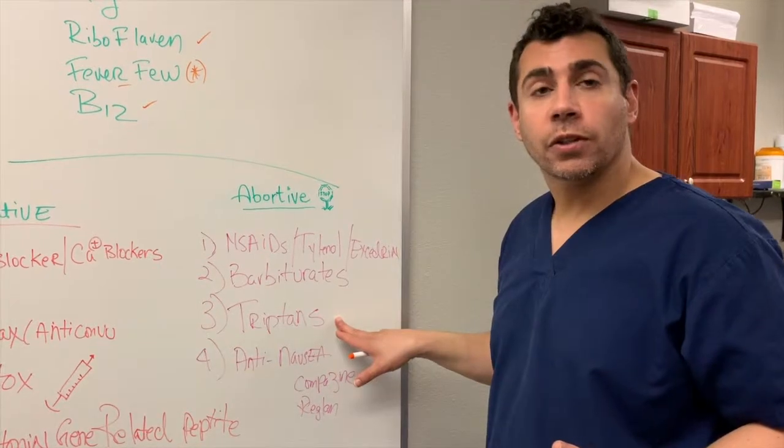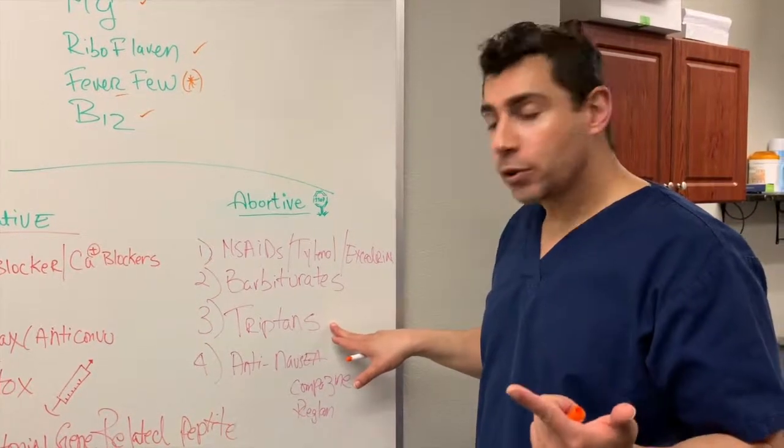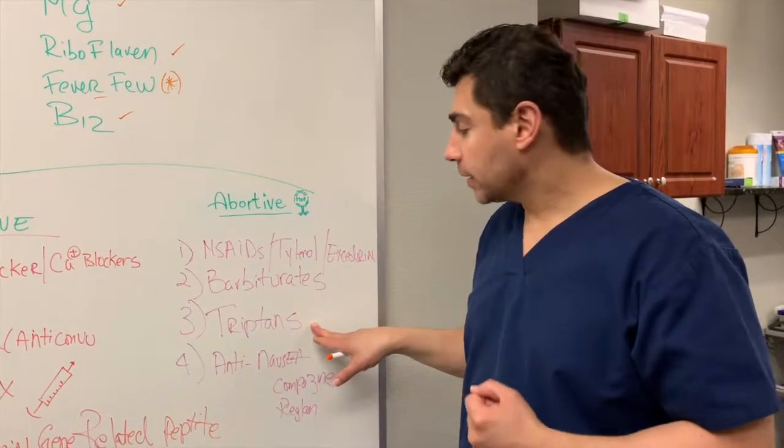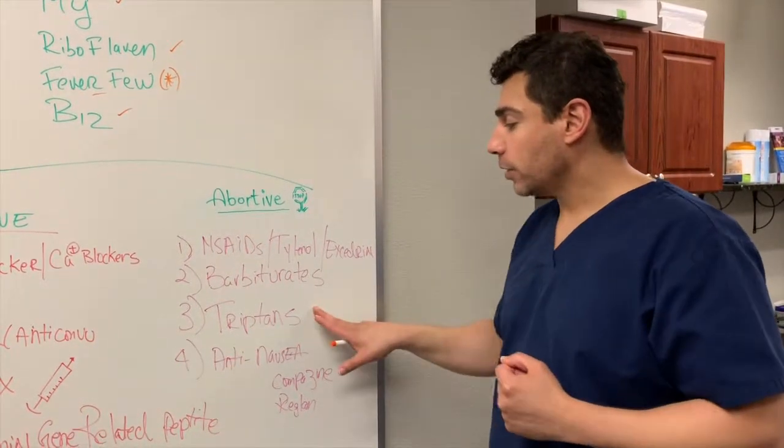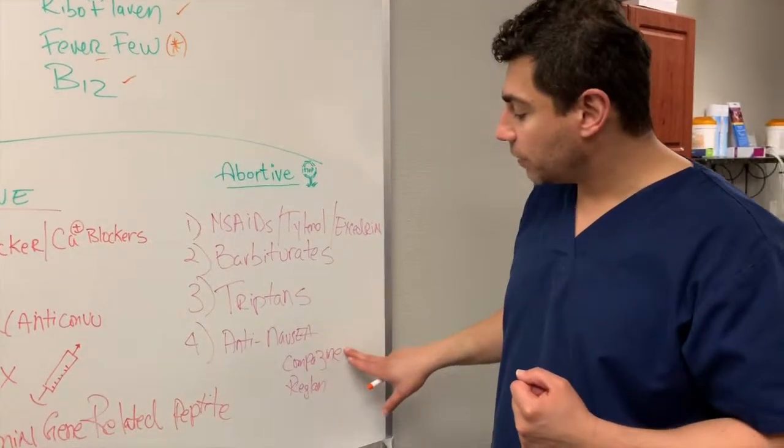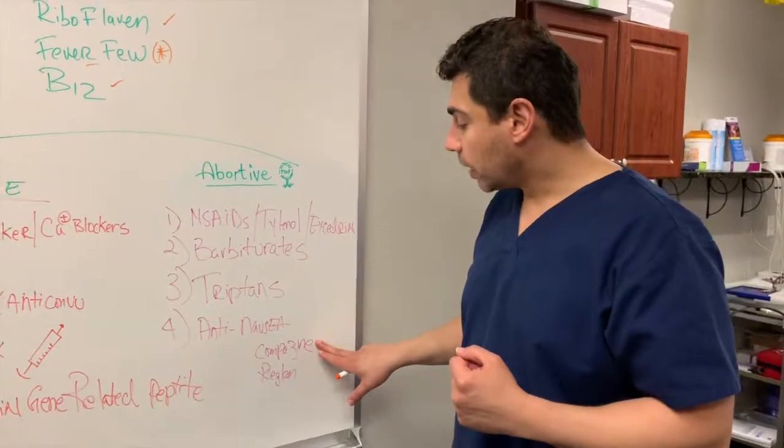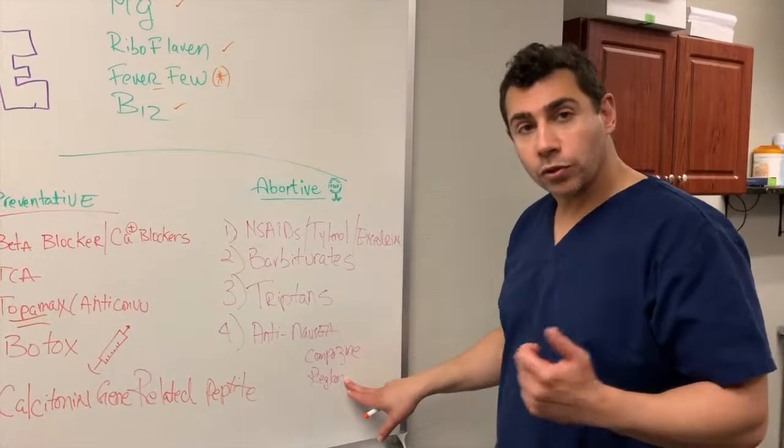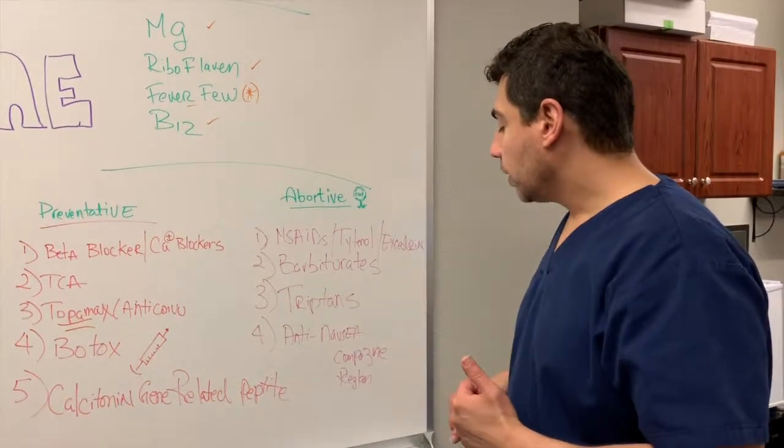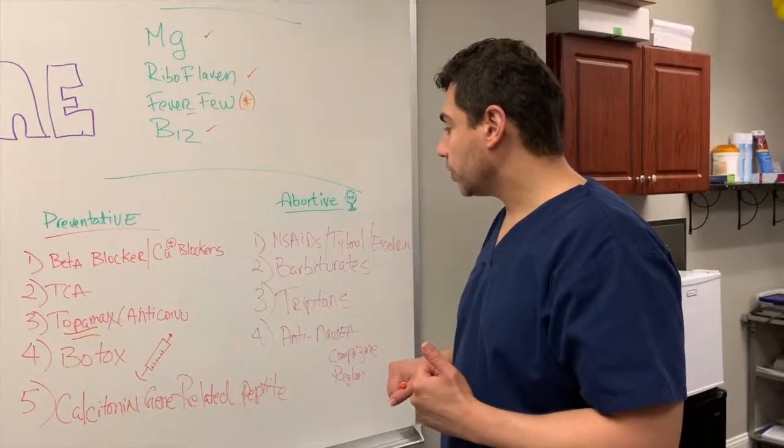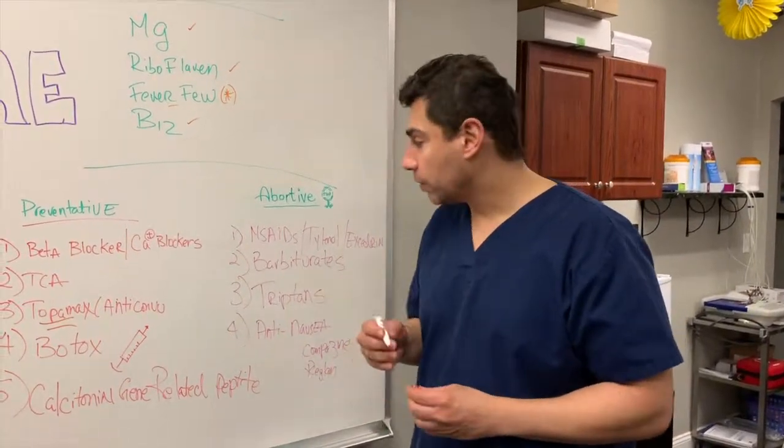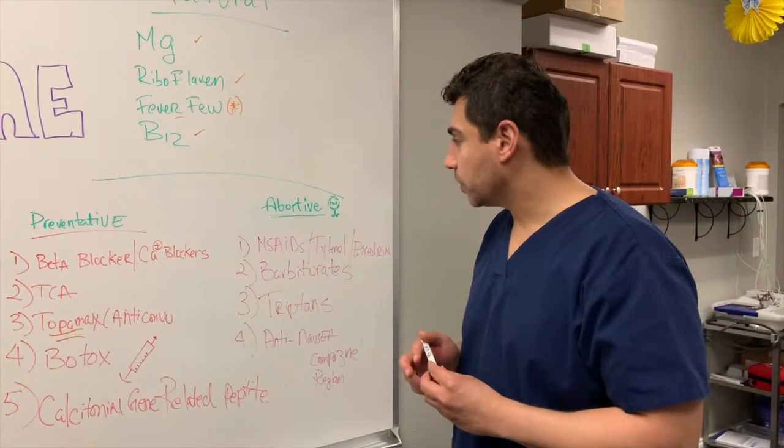The Triptans are your traditional Imitrex with Sumatriptan and then the alternatives like Zomig, Relpax, and a handful of others. Two anti-nausea medications that have been in favor with some neurologists are the Compazine and Reglan. There's Zofran and Phenergan, which can be used, but these two are favored by certain neurologists in the local community. And I'm interested in trying them out as well for some of my alternative treatments for patients.